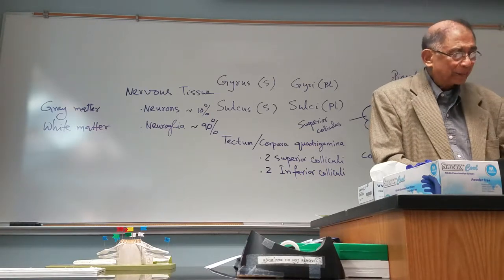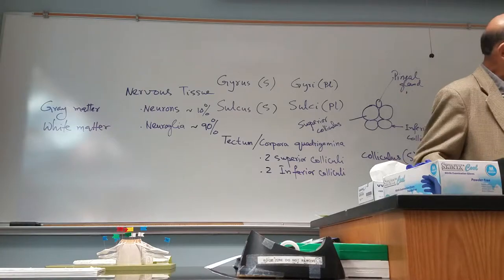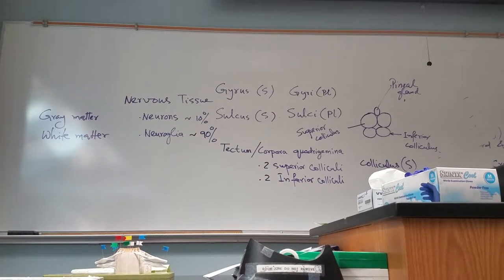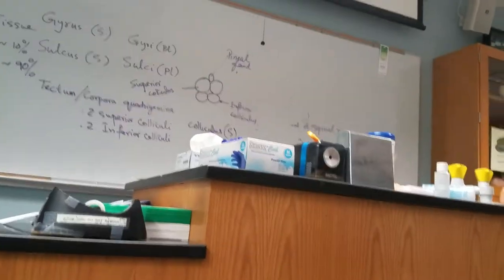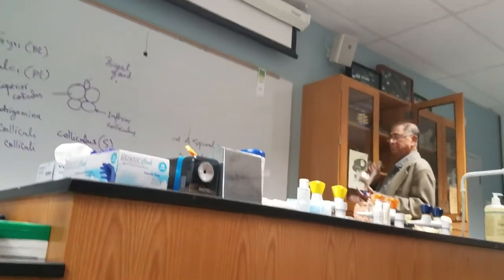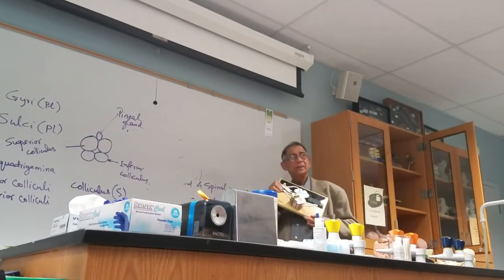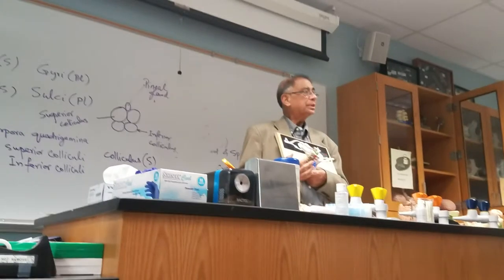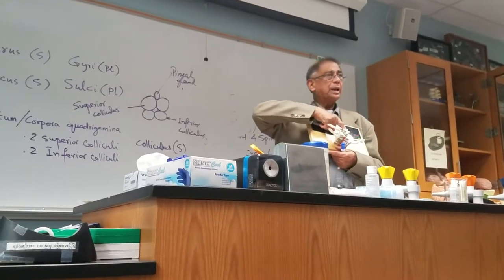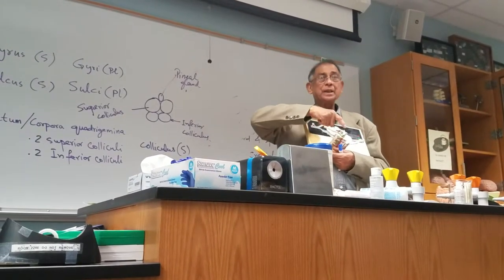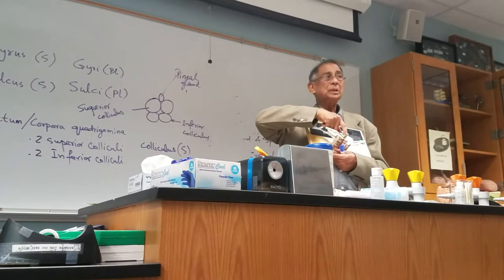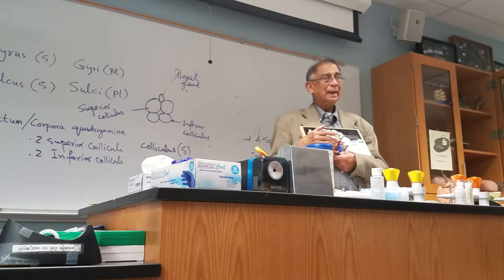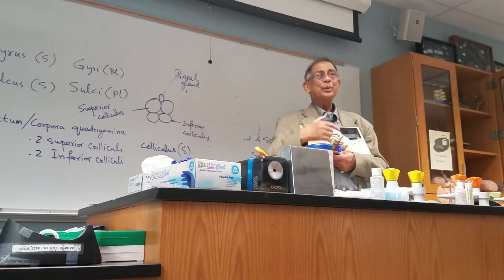The arrangement of white matter and gray matter differs between structures. Looking at this model of a sectioned spinal cord, you can see outer white matter and inner gray matter. In the case of the brain, it will be outer gray matter and inner white matter.